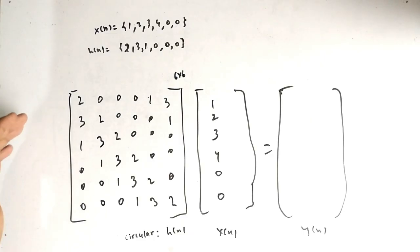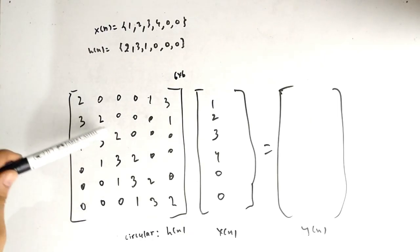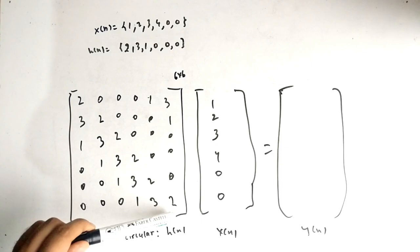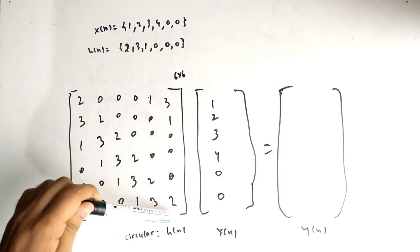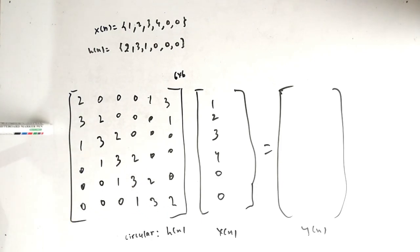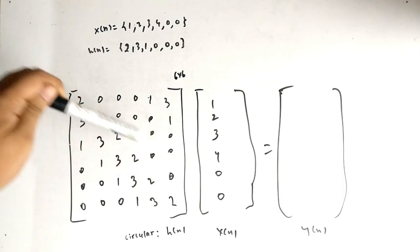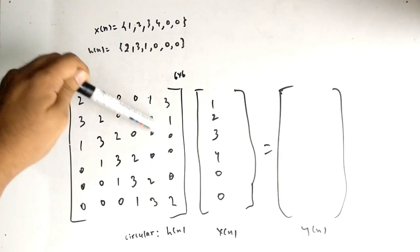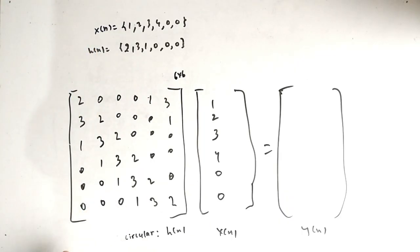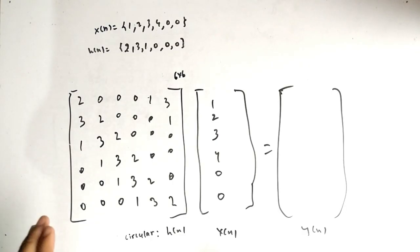To verify whether the matrix is filled correctly, note that the diagonal values should be the same. You can see 2, 2, 2 are the same; 3, 3, 3 are the same; 1, 1, 1; 0, 0, 0. In the opposite diagonal it is also the same. If this is satisfied, you can confirm the matrix is filled correctly.